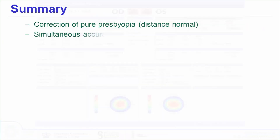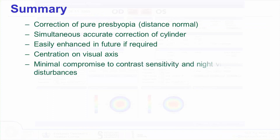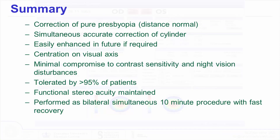In summary, correction of plano-presbyopia can be achieved very accurately with minimal compromise to visual quality, preservation of functional stereoacuity, in a procedure suitable for over 95% of presenting patients. It is easily enhanced if changes occur in the future, and is performed as a 10-minute bilateral simultaneous LASIK that heals in a few hours — with the patient almost certainly reading the menu that evening to their partners or friends without glasses.